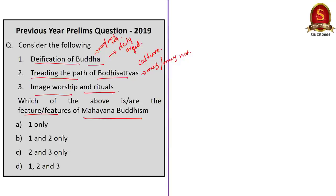Here we have to be very careful because there is a connection between statement one and statement three. Statement one says deification of Buddha, and statement three says image worship and rituals. Only when statement one is true can three be true — only when Buddha is considered as God will there be image worship and rituals. If he is not considered as God, there won't be any image worship or rituals. So there are two probabilities: in the answer, both one and three should be there, or both should not be there. If statement one is wrong, then statement three is also wrong — search for an option with two only; it is not there.